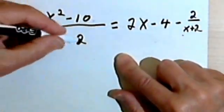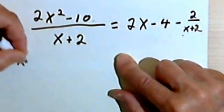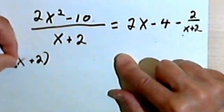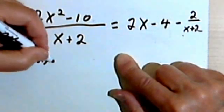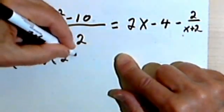So once again, I'm going to take this denominator, the x plus 2, and multiply that by the non-fraction part of my answer, so 2x minus 4.